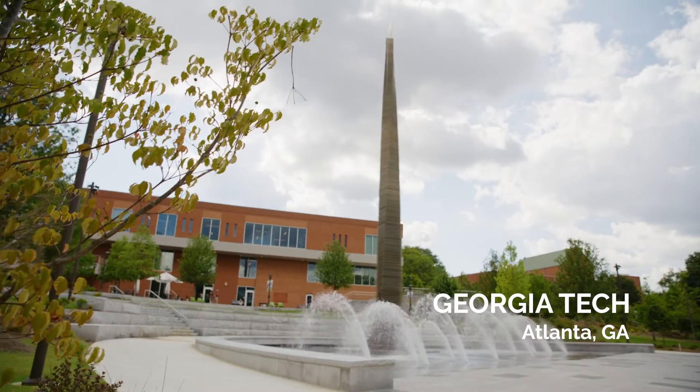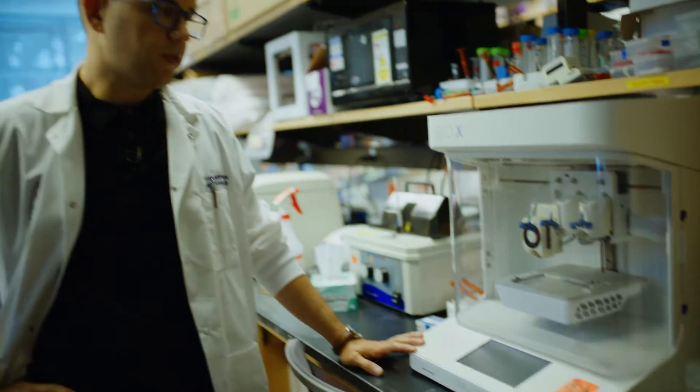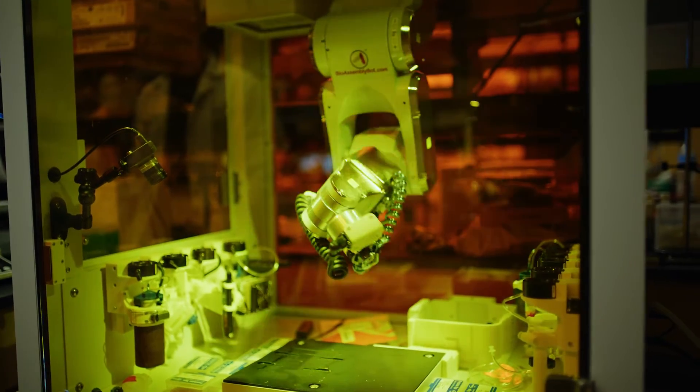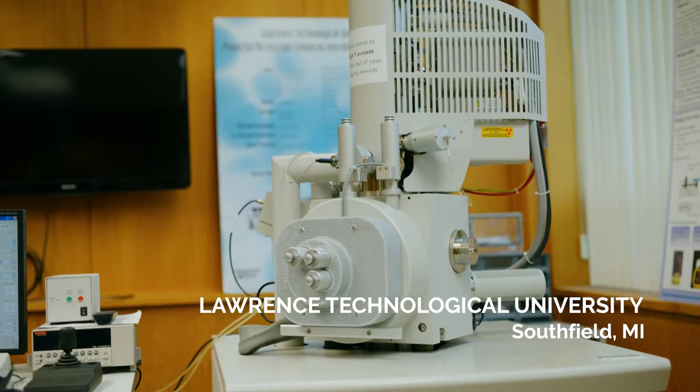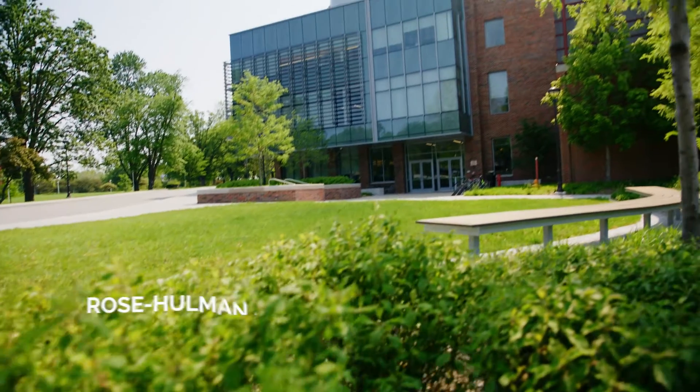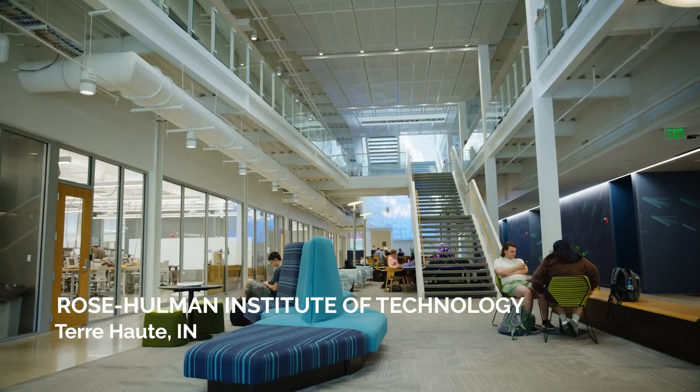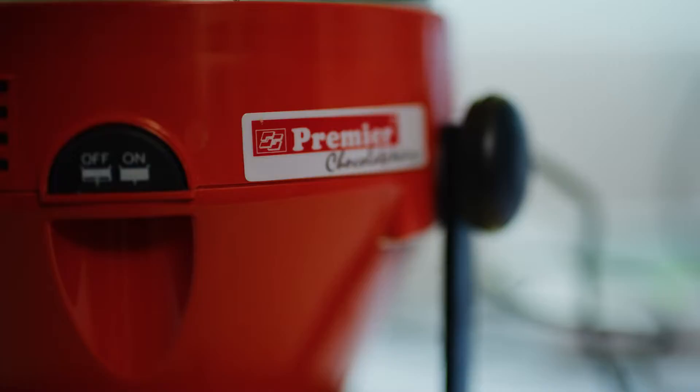We're on the campus of Georgia Tech. Labs like this one are using 3D printing technology to bioprint live organic tissues. A lab at Lawrence Technological University is developing new ways of making batteries for electric vehicles. And at Rose-Hulman Institute of Technology, they're looking into the chemistry of coffee and ice cream. Yes, you heard right. Coffee and ice cream.